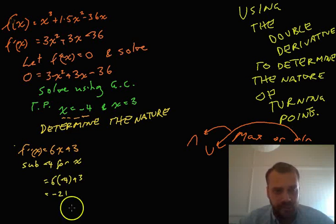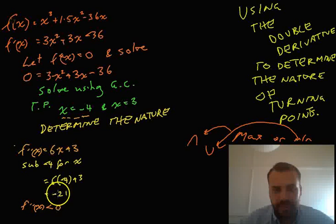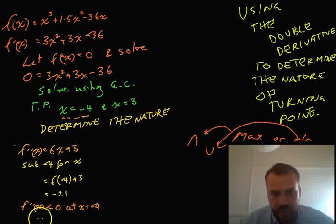That was pretty convoluted, so we'll write that down right here. Now, f double dash x is less than 0, i.e. negative something, at x equals negative 4. Therefore, it's a maximum.